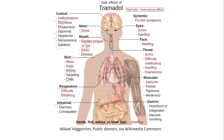GIT effects may include diarrhea or constipation. Swelling of the hands, feet, ankles, or lower legs may occur due to water retention associated with tramadol use, as opioid agonists decrease renal function and increase antidiuretic hormone levels, leading to more water retention and potential edema.